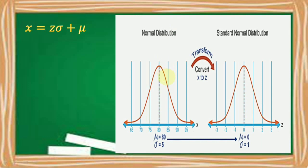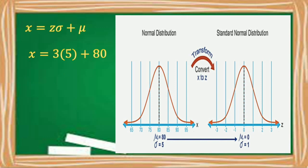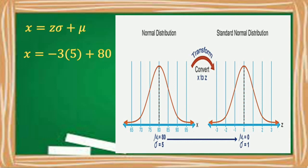If the given z-score is negative 1, with the same mean of 80 and standard deviation of 5, applying the formula we have negative 1 times 5 plus 80. Negative 1 times 5 is negative 5, plus 80, so x is equal to 75. The corresponding normal variable x of z-score negative 1 is 75. If the z-score is 3, then 3 times 5 is 15 plus 80, so x is 95. If z is negative 3, then negative 3 times 5 is negative 15 plus 80, so x is 65.